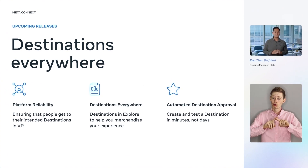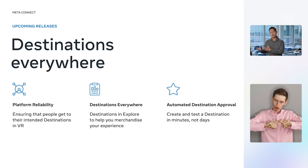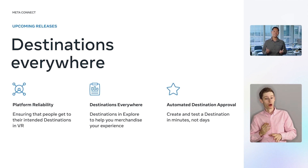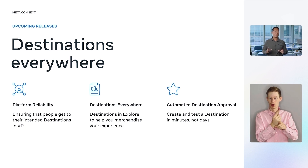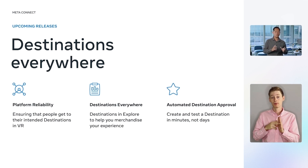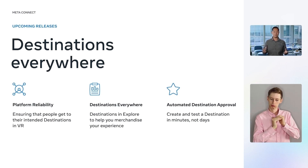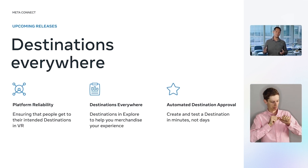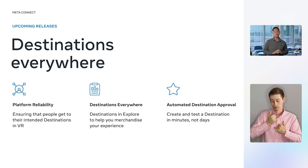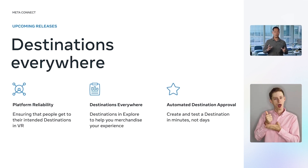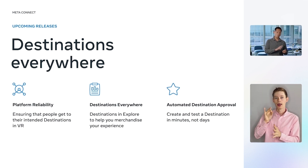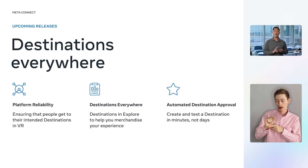Reliability has been a huge focus for us. We want to ensure that when users travel in VR, they get to their intended destinations. We've migrated the travel system to a more stable infrastructure, and we have plans to improve the presence service later this year. We're also adding new tools to help MetaQuest users better navigate travel interruptions caused by tutorials, IAPs, and app updates.